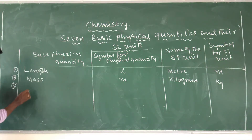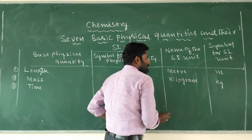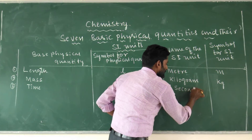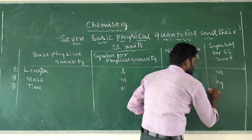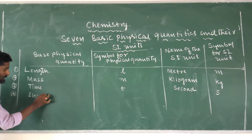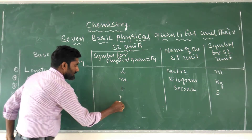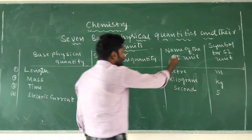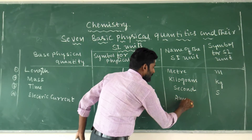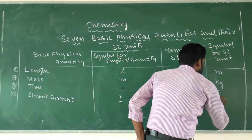The third basic physical quantity is time. The symbol for time is small 't' and the SI unit of time is the second, with symbol 's'. The fourth basic physical quantity is electric current. The symbol for electric current is capital 'I', and the SI unit is the ampere, with symbol capital 'A'.